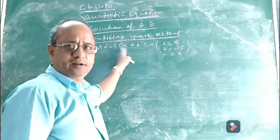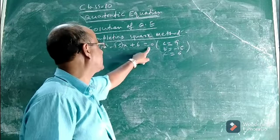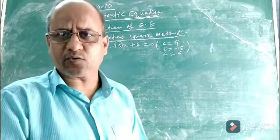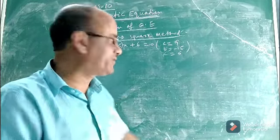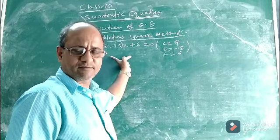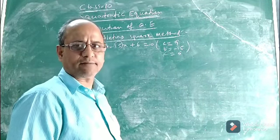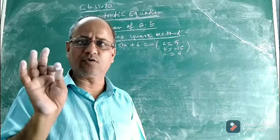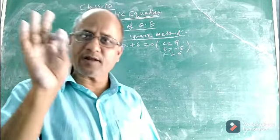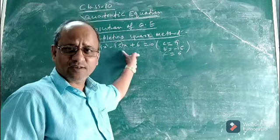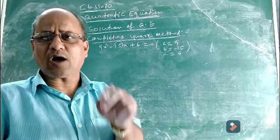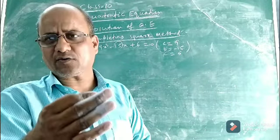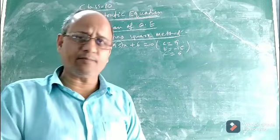Let us consider a quadratic equation: 9x² minus 15x plus 6 equals 0, and we want to solve it by the completing the square method. First, we must understand what completing the square means. Looking at the left-hand side quadratic polynomial — is it a perfect square? A perfect square is when a number can be expressed as the square of some natural number, or in the form of (a+b)² or (a-b)².